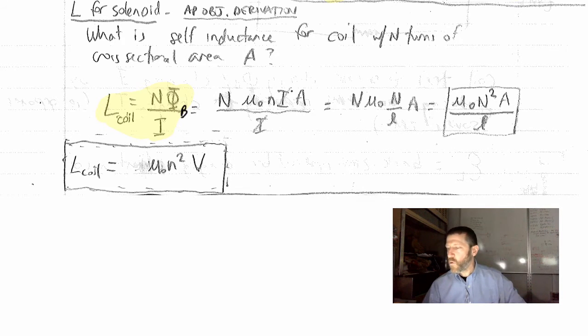so those go away, and then I get the n number of turns times μ₀, the permeability of free space, n over l times A. Now what the heck did I do to get this?